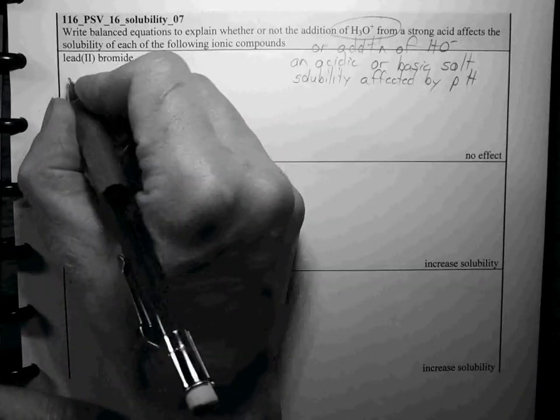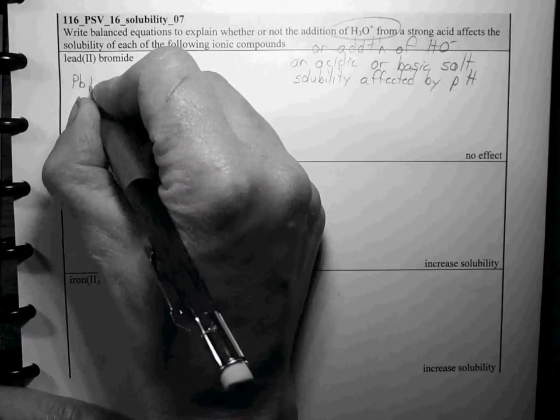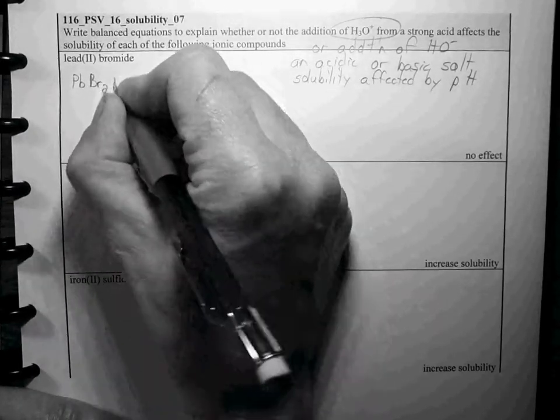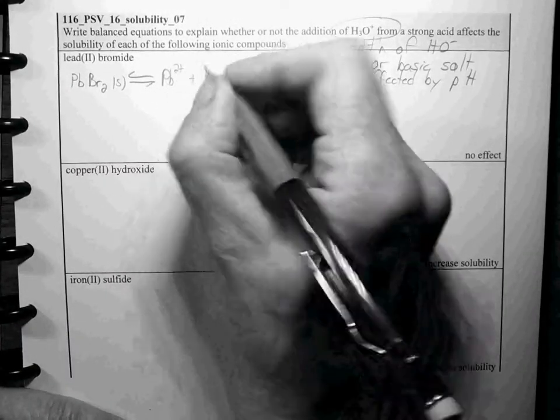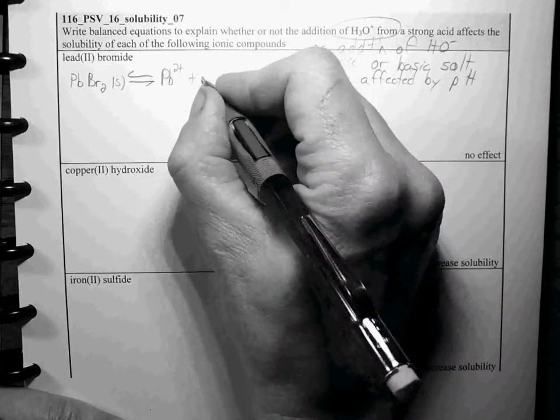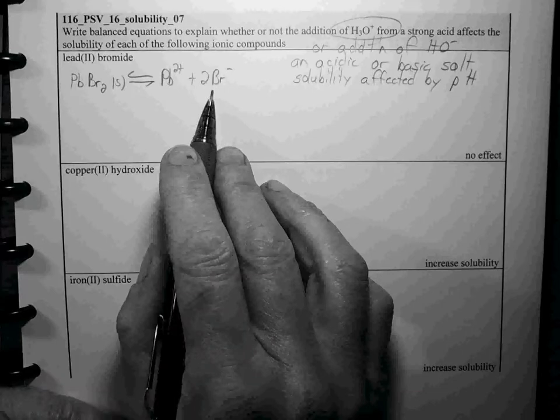Let's look at our equilibria. Lead(II) bromide solid, it's not very soluble but when it dissolves it dissociates into Pb2+ and 2 bromides, Br- Br-.